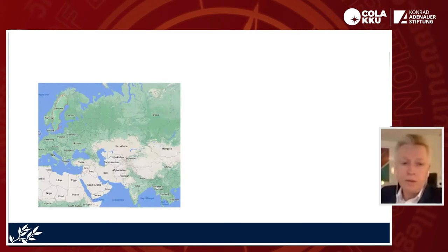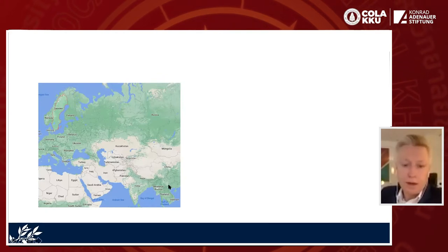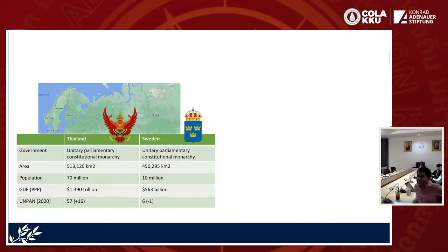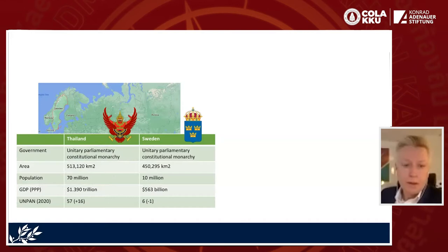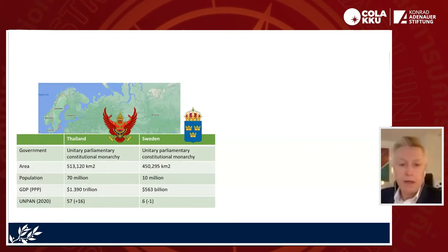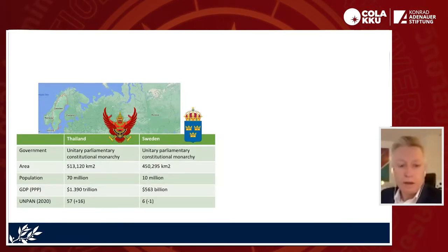Sweden is located up in the northeast of the map. In the map it looks like Sweden is much bigger than Thailand, but that's just a strange map. Thailand is slightly bigger than Sweden, and you have a much larger population. Our GDP is about one third of yours. But Sweden has managed to develop e-government in a fairly successful way so far, while Thailand is still lagging a little bit, at least according to the United Nations survey of this year.